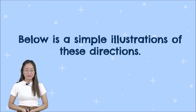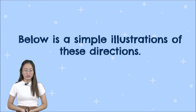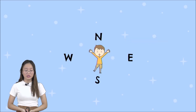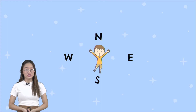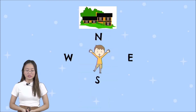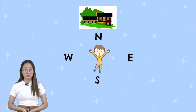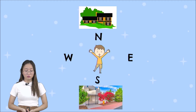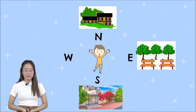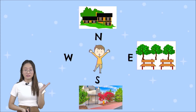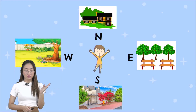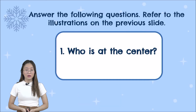Below is a simple illustration showing the different objects in different directions. Let's start with the north — in the north direction, we have the classrooms. On the south, we can see the gate and the plants. On the east direction, we have the benches and the trees. On the west direction, we have the tree and the plants.